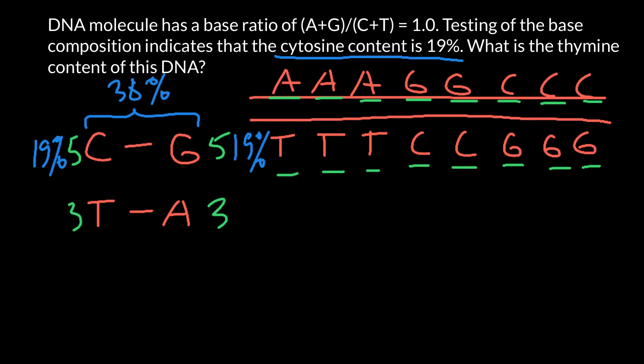So if cytosine would be 19%, then guanine also going to be 19%. 19% plus 19% would give us 38%. We know that our double-stranded DNA, 38% is cytosine and guanine. That gives us information that the rest two bases would make another 62%.